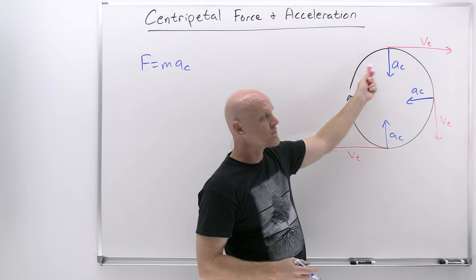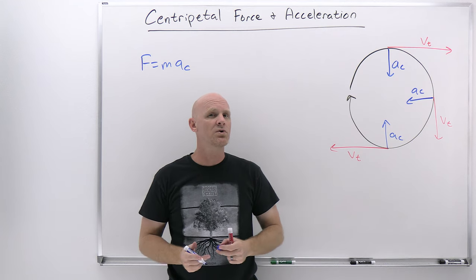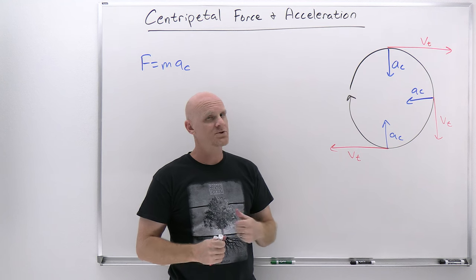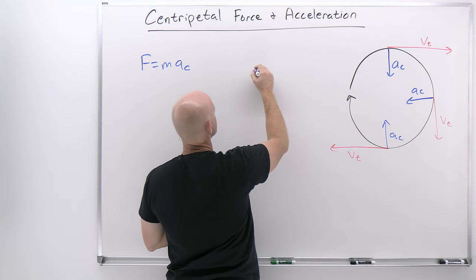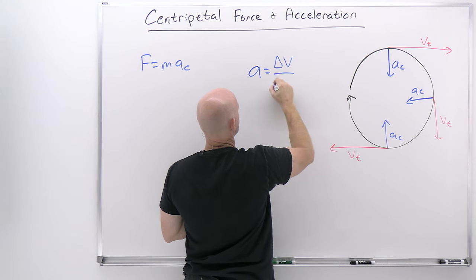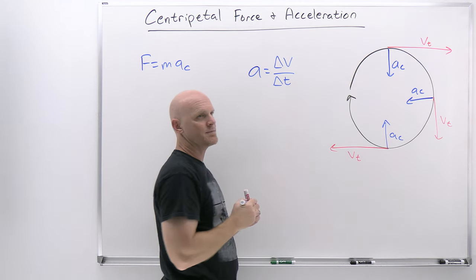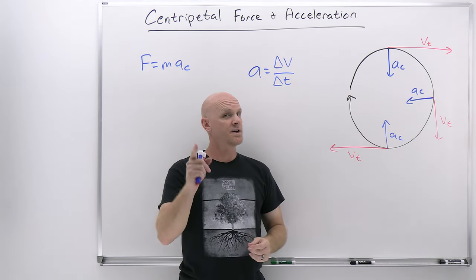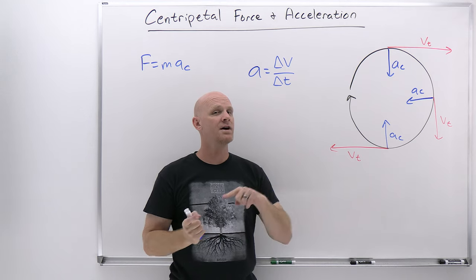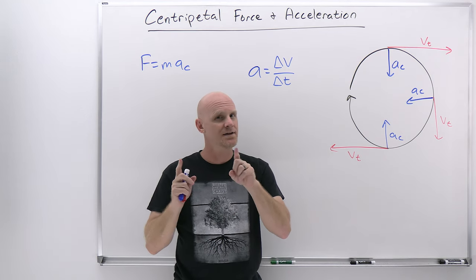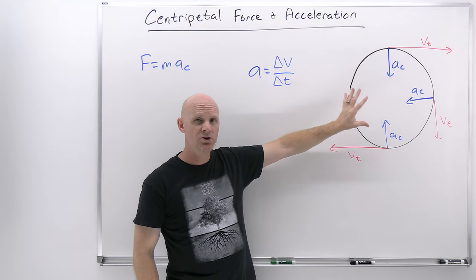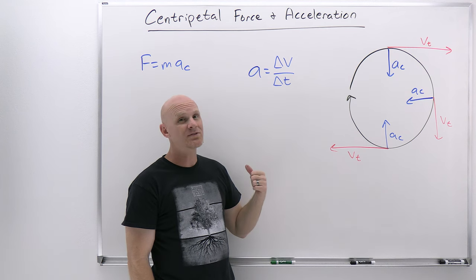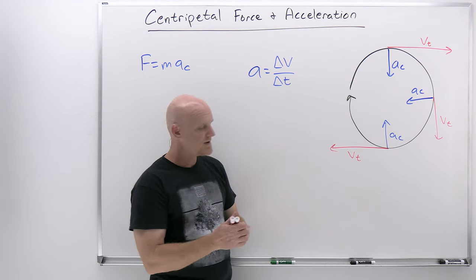The most common example we'll be dealing with is what we call uniform circular motion, where we're traveling at a constant speed. Just because we're traveling at a constant speed does not mean we're traveling at a constant velocity. Acceleration equals change in velocity over change in time. If we're traveling at a constant speed, you might ask how is this not going to equal zero — but don't forget that velocity is a vector with both magnitude and direction. Even though the magnitude might not be changing, the direction is, so there is an acceleration.